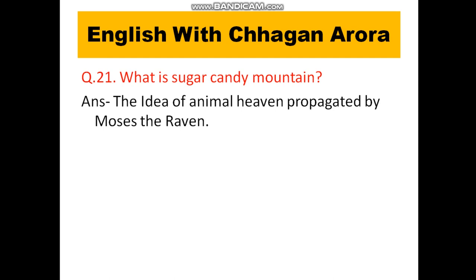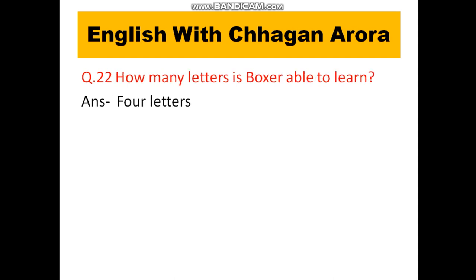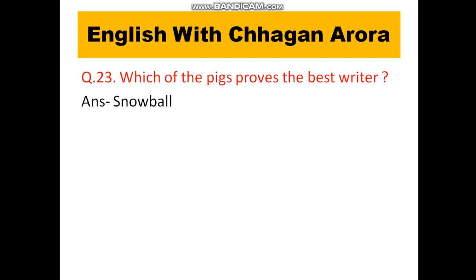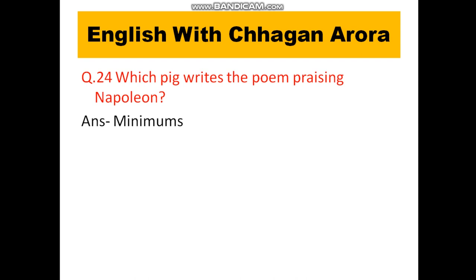The idea of animal heaven was propagated by Moses the Raven. How many letters is Boxer able to learn? Which of the pigs proved the best writer? The answer is Snowball. Which pig wrote the poem praising Napoleon? The answer is Minimus.